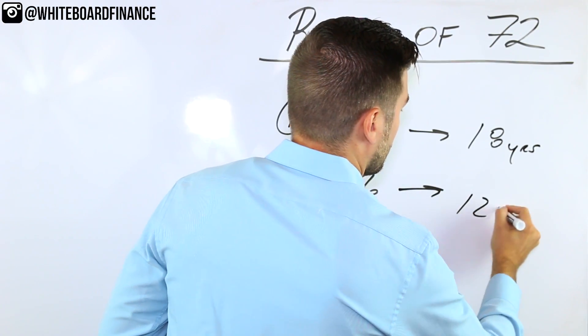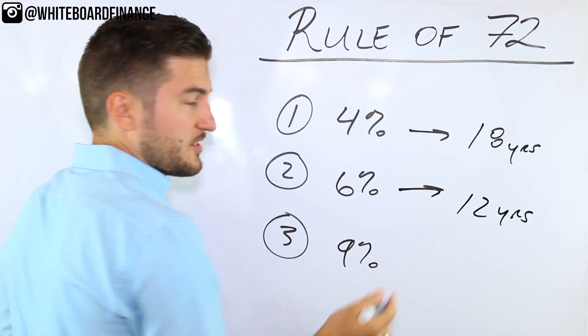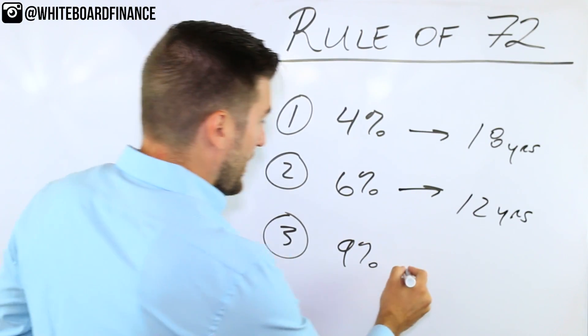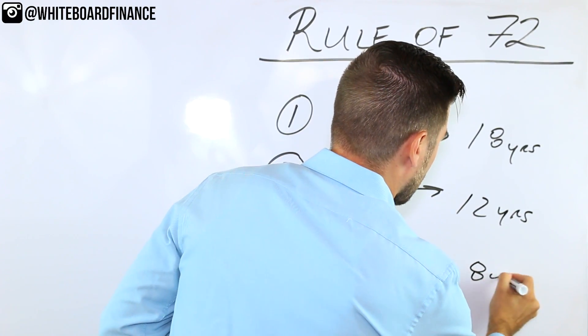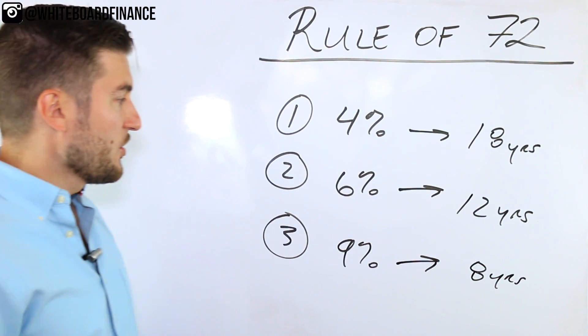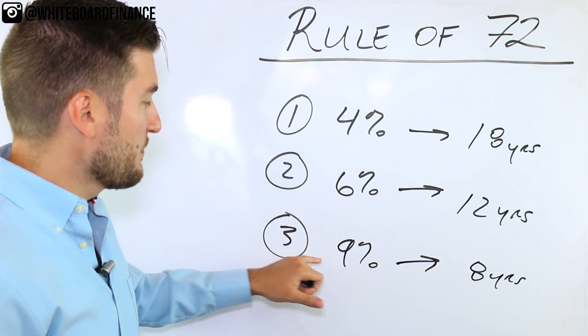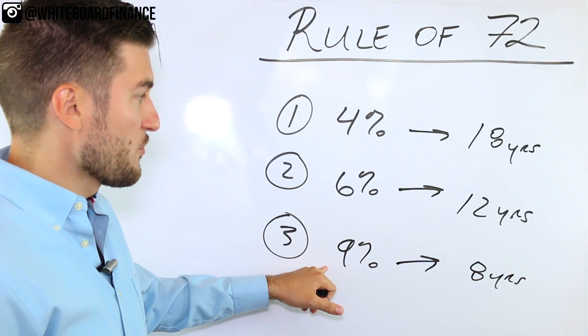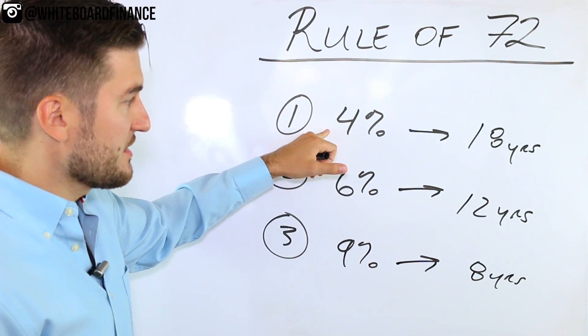6% is 12 years, 9% is eight years. So now you actually have a visualization of how much better this 9% rate of return really is compared to the six and the four.